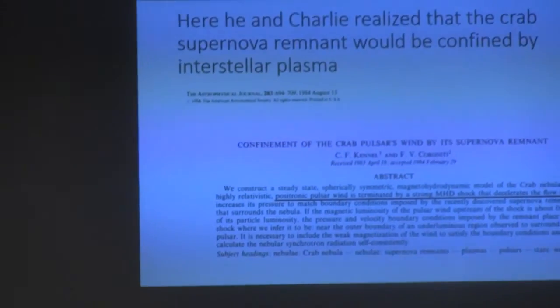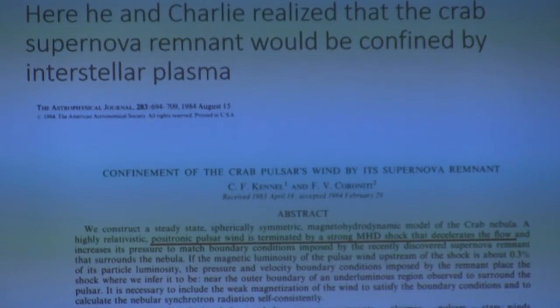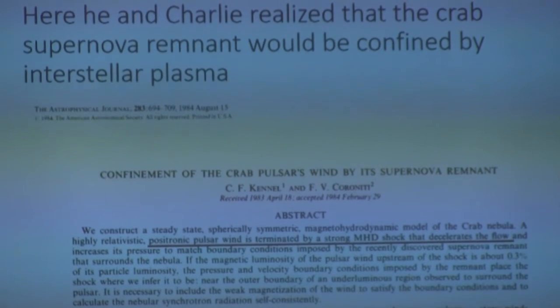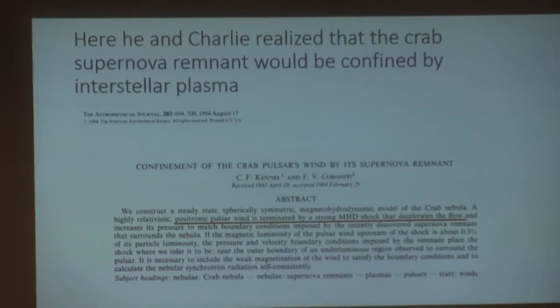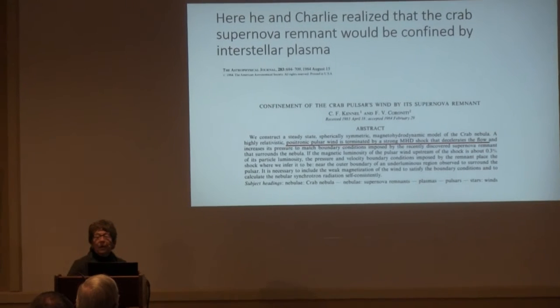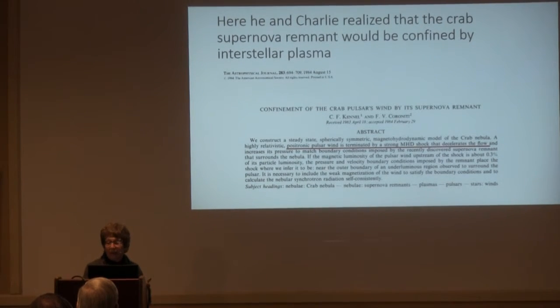I pulled out one nice example of where Ferd did a very good job with Charlie Pennell in taking ideas explored in Earth's environment and applying them to an astrophysical problem. It had to do with an outflowing pulsar wind — relativistic, so the equations get much more complicated — but it's terminated by a strong MHD shock that decelerates the flow. Some of the phenomena seen in the vicinity of the crab pulsar can be understood in terms of dynamics we had explored at Earth.